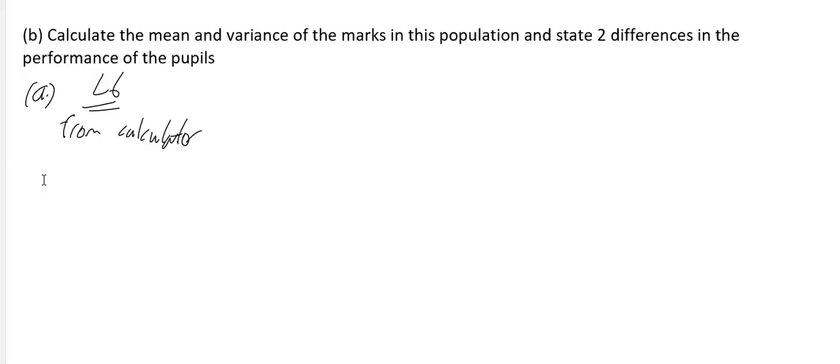Once you put those all into the calculator, press AC, then go to option and then 7. This is on the Classpad calculator. Go to option, then variable calculator.